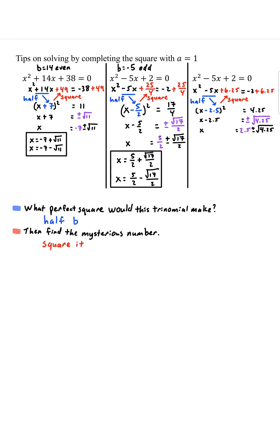Square both sides. And then add 2.5. So x equals 2.5 plus or minus square root of 4.25. I wouldn't simplify square root of 4.25.